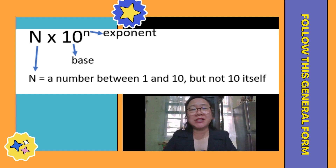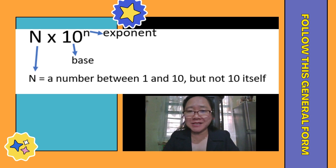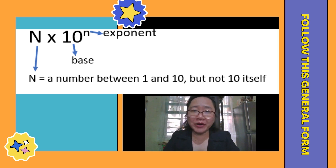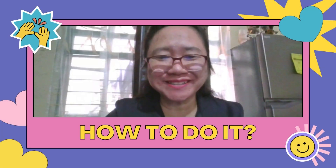The exponent determines the number of places or units the decimal point is moved. If the decimal point is moved to the left, the exponent is expressed as positive. But if the decimal point is moved to the right, then the exponent is expressed as negative.